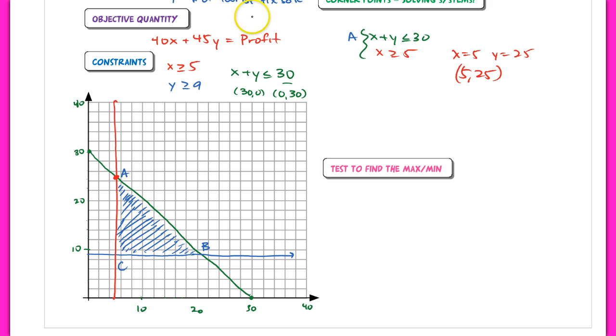And for point B, same thing goes here. We're now solving the system with X plus Y is less than or equal to 30 and the blue line, Y is greater than or equal to 9. And if Y is equal to 9, then X should equal 21. So we have the coordinate 21, 9.